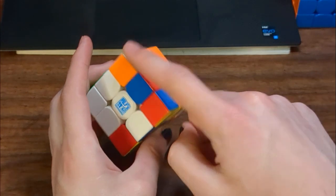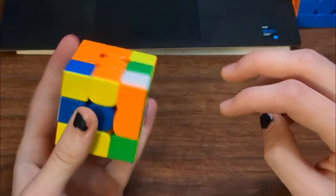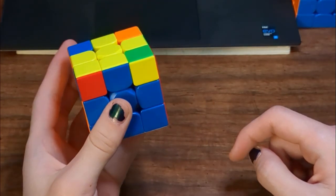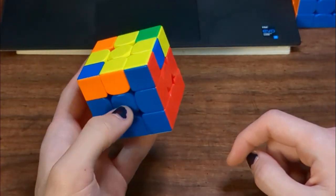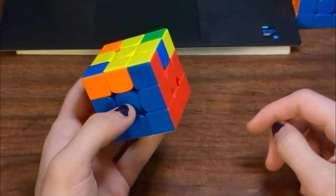And then I saw this pair, so as I was solving that, I could cancel into that, which also set up this pair for the front. You can just insert it, and then you're left with this Sune 2GLL, which these two colors are the same, and these two colors are opposite. That's how I recognize it.